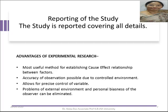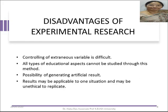Let us see the important advantages of experimental research. Experimental research is considered a more useful method for establishing positive relationships between factors. Accuracy of observation is possible because the experimental environment is controlled from different extraneous variables. It allows the researcher to free oneself from external environment as well as from personal biasness.